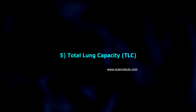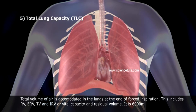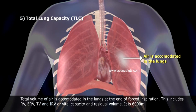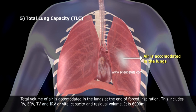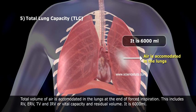5. Total lung capacity (TLC): Total volume of air accommodated in the lungs at the end of forced inspiration. This includes RV, ERV, TV, and IRV, or equivalently vital capacity plus residual volume. It is 6,000 ml.